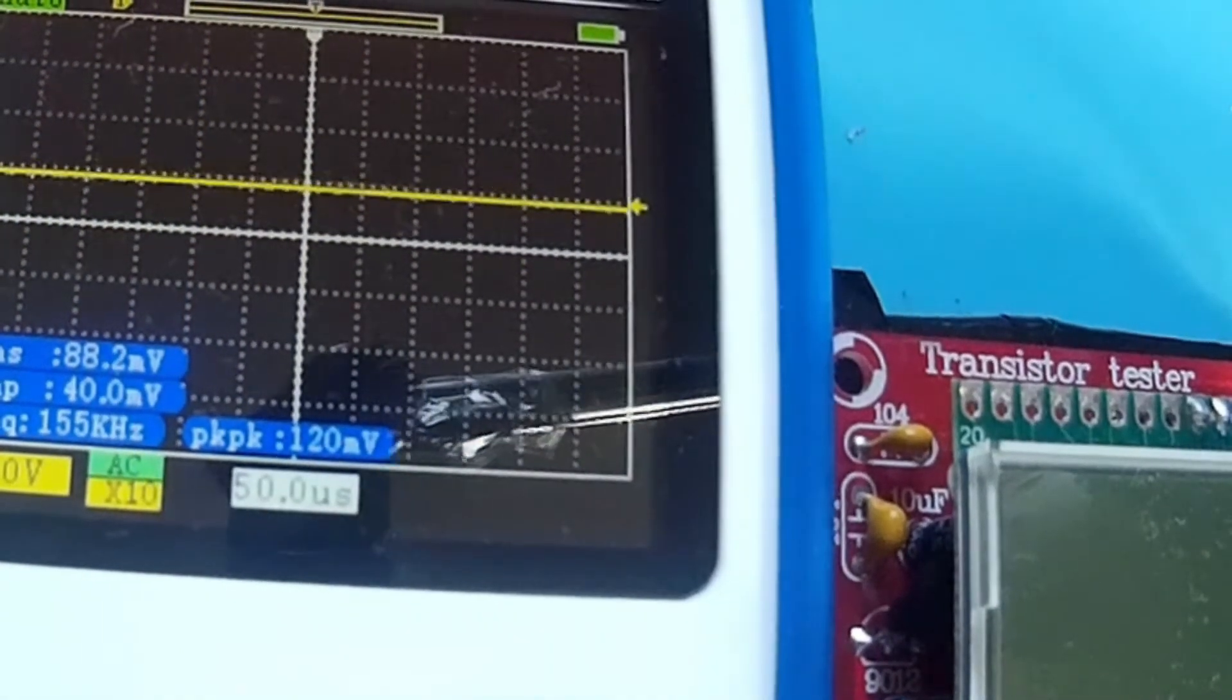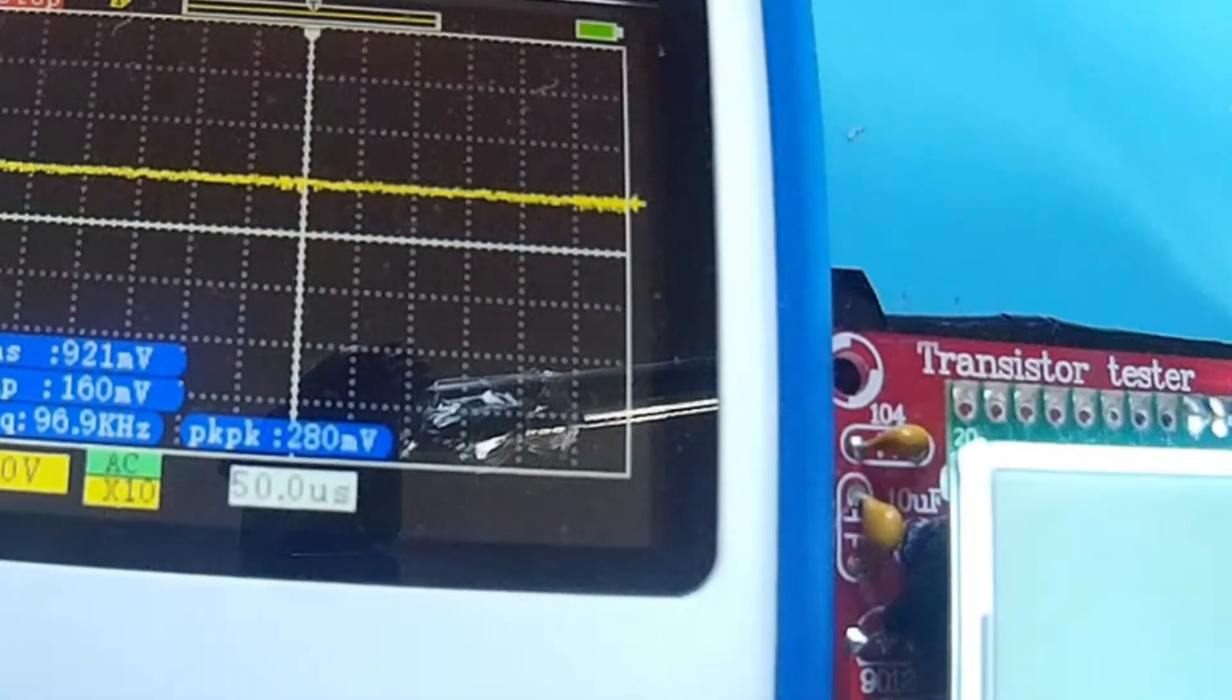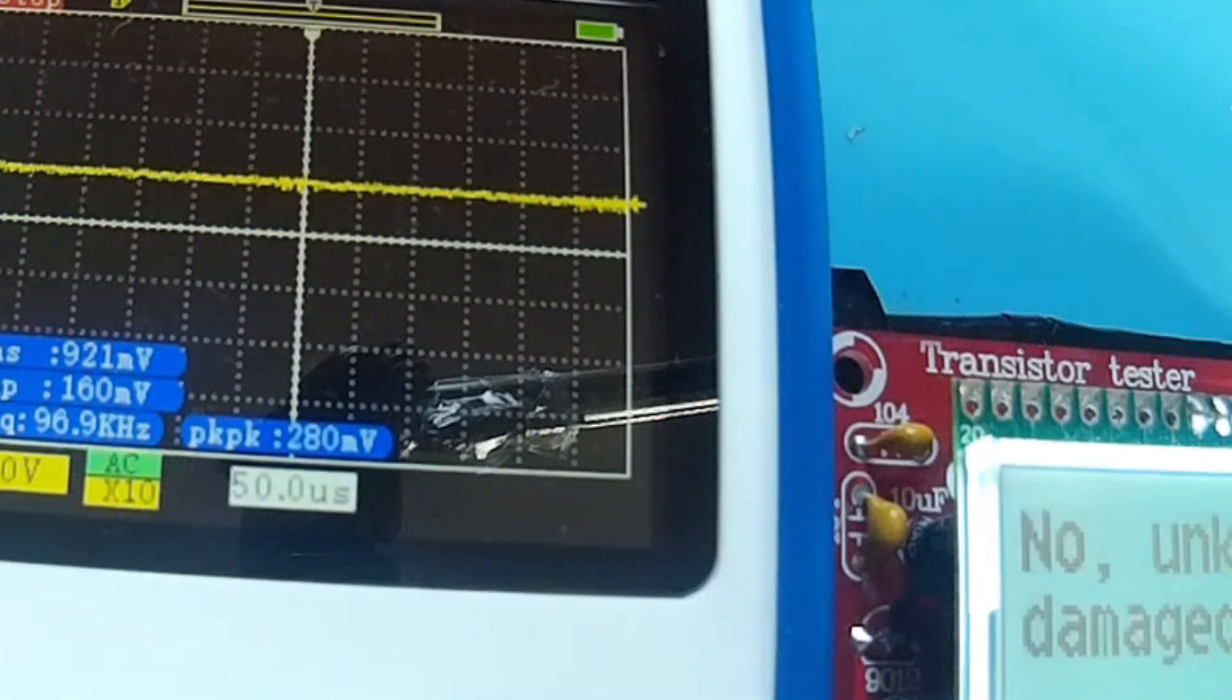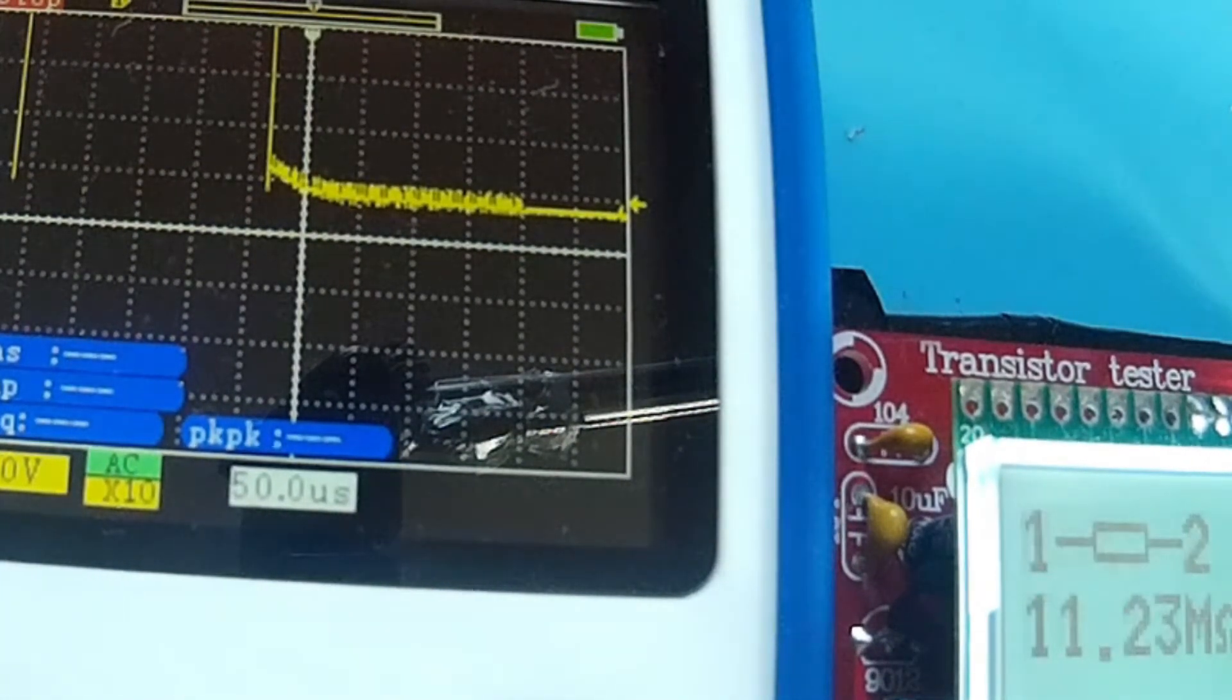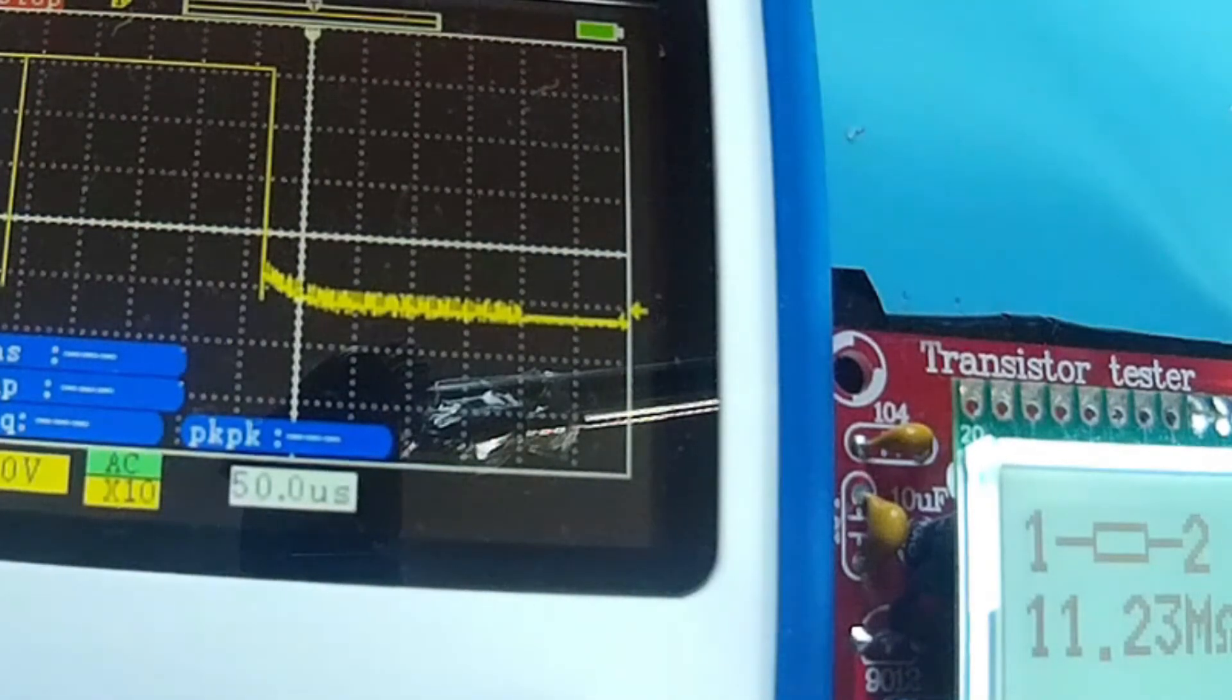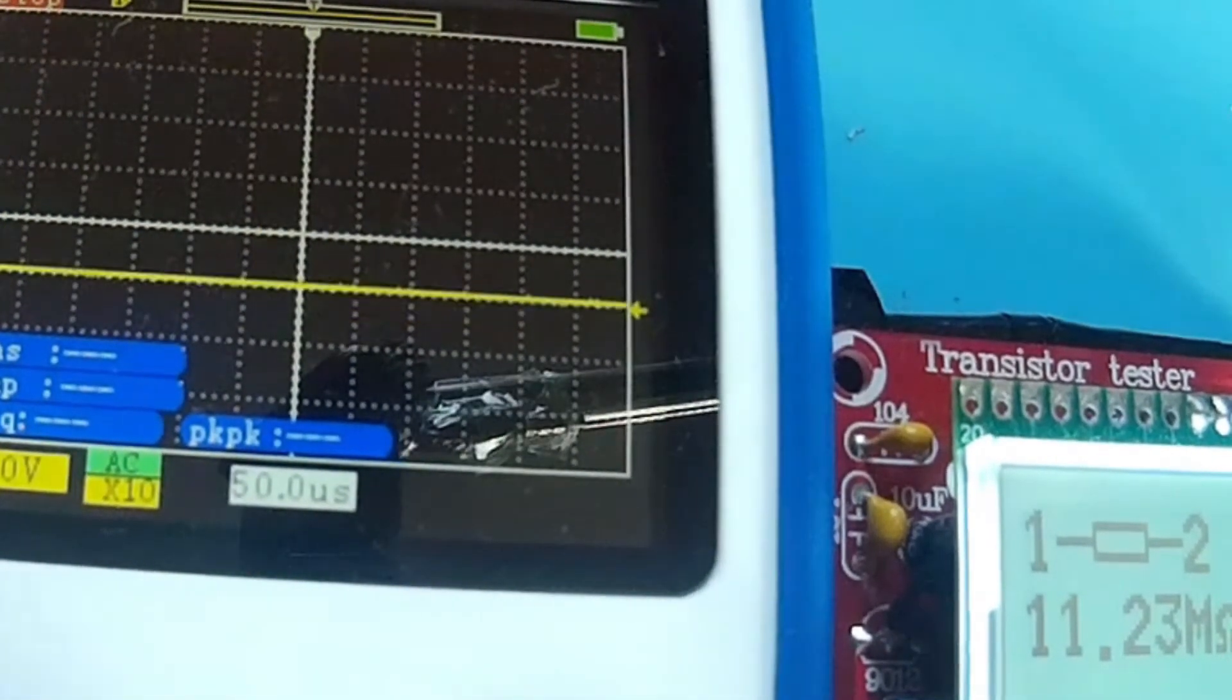Now let's have a single trigger and let's see what we can catch when this one starts measuring something. Look there. What a nice and interesting picture. So we have 11.23 megahertz. You see, that is the beginning of the measurement.